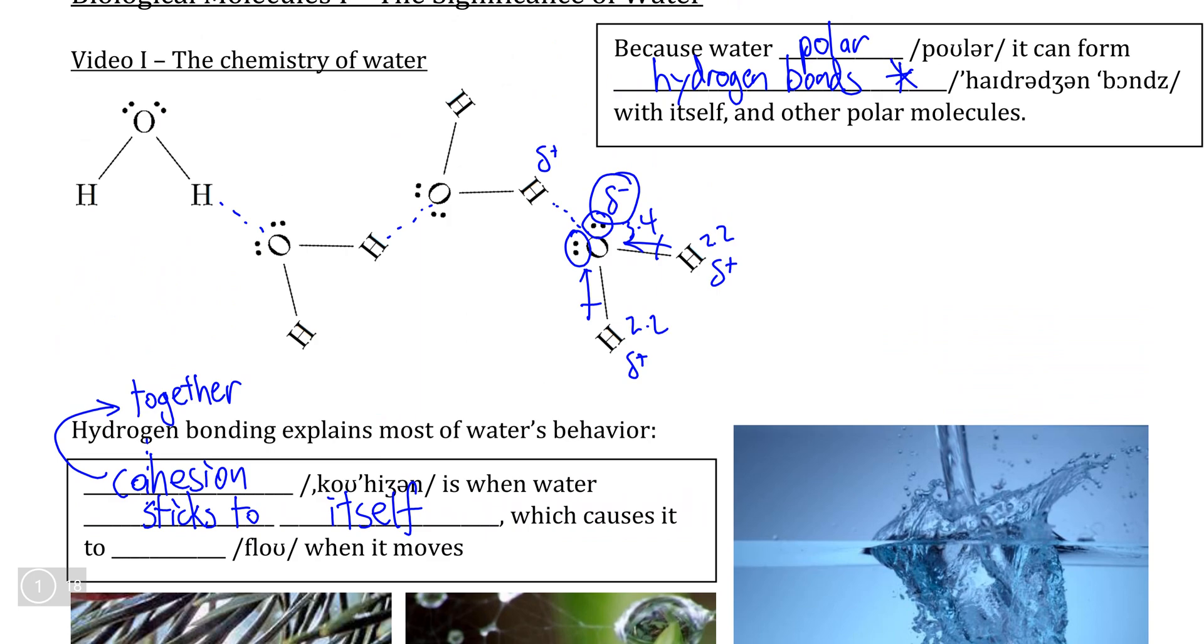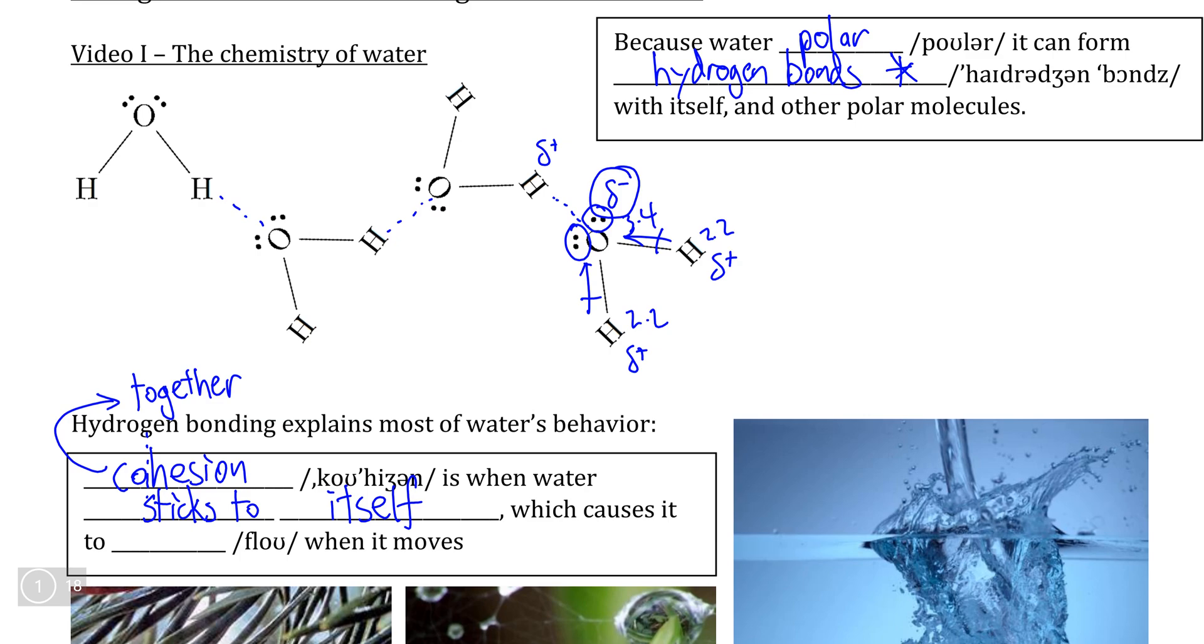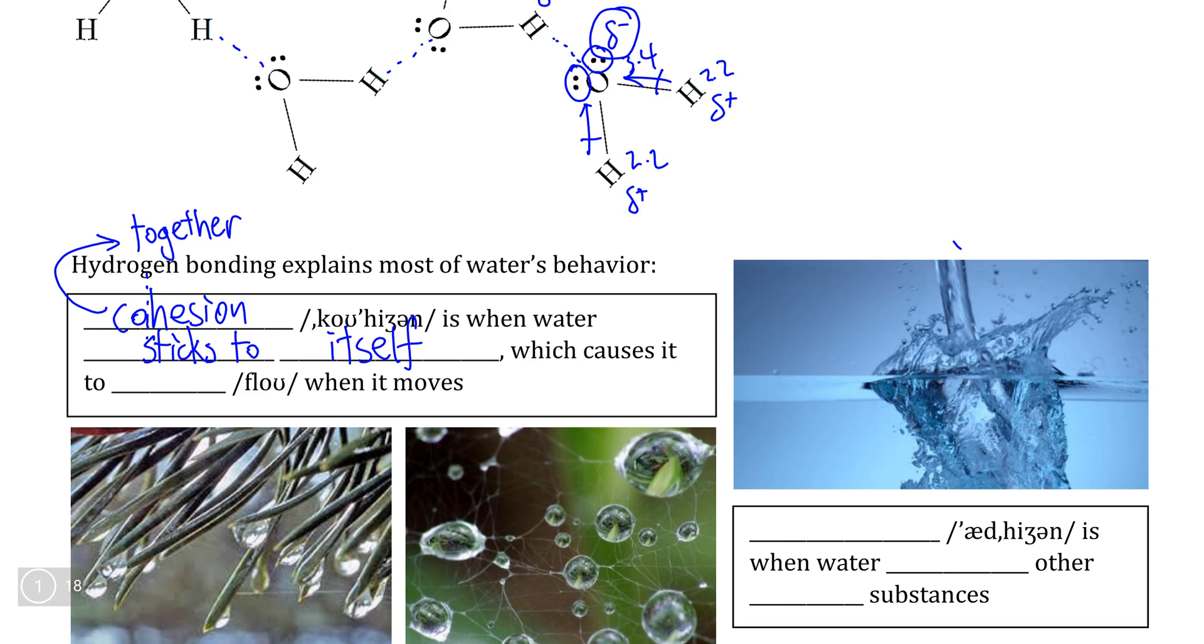So this hydrogen bonding that we've drawn between these water molecules here are an example of cohesion at the chemical level. And this explains why water moves as a single unit when it is poured in a process that we call flow.